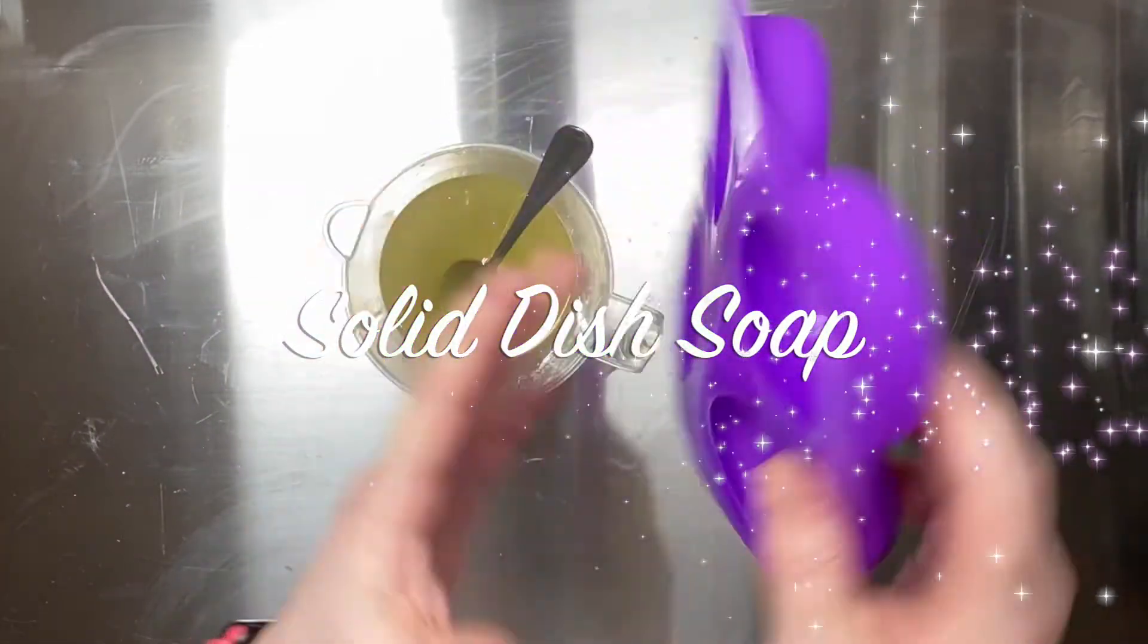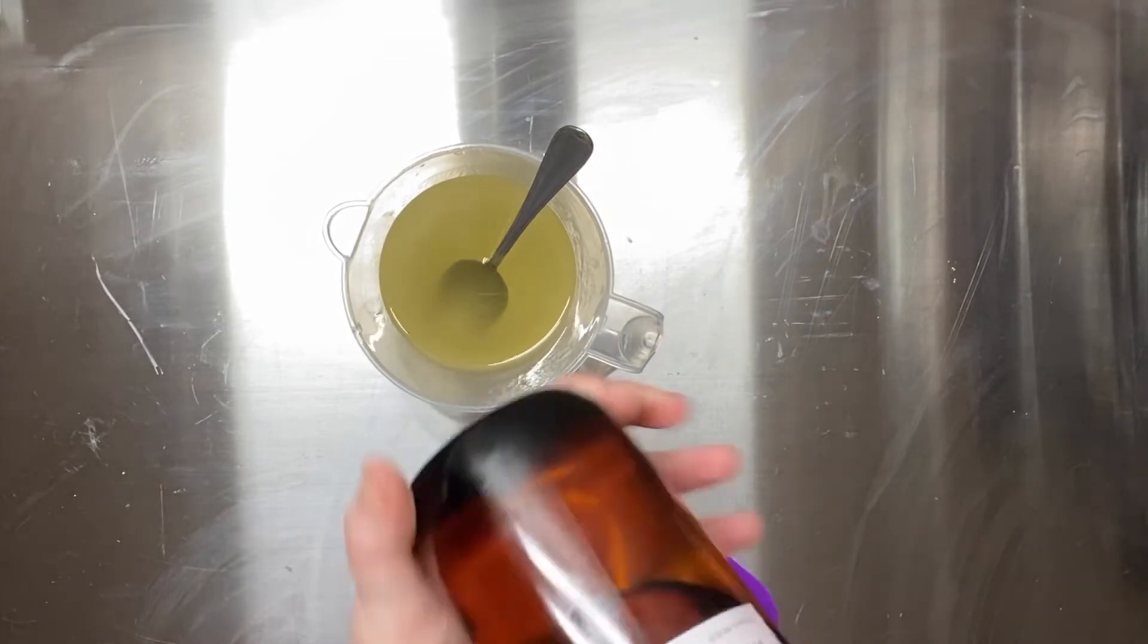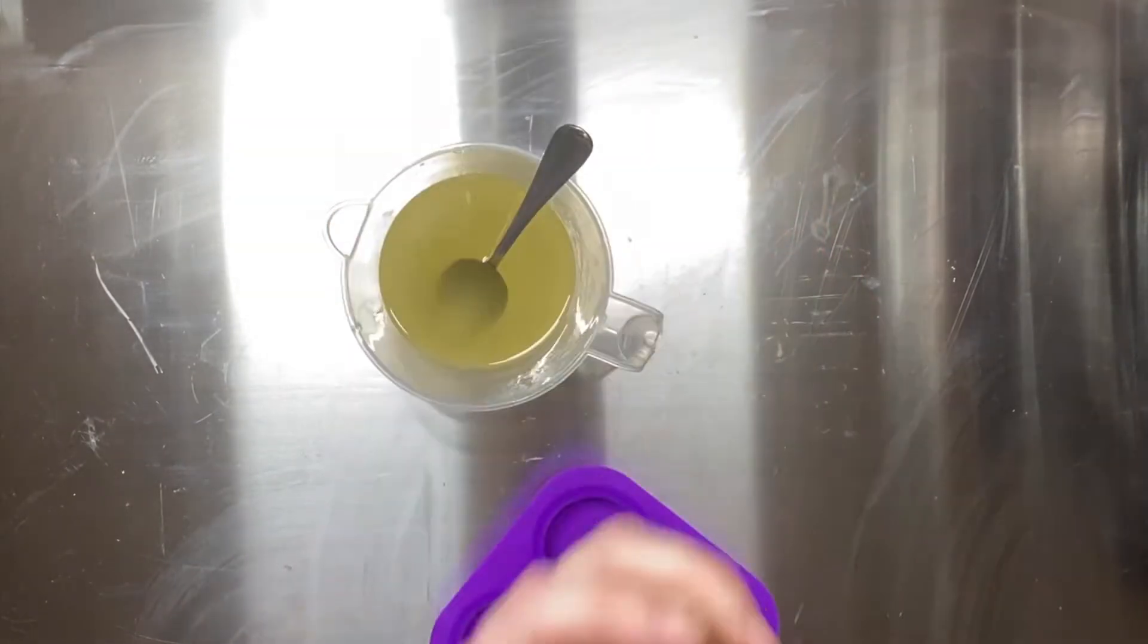Hey there, it's Carrie with the Gilded Bubble, and today I'm going to be making a solid dish soap. This is a practice batch for myself, so I'm making a very small amount, and I am scenting it with Bramble Berry's Lime.